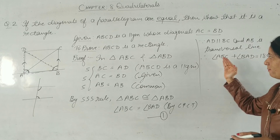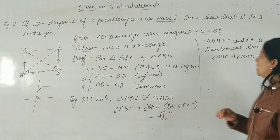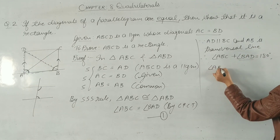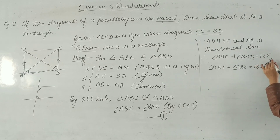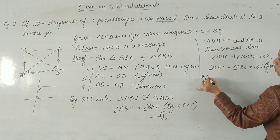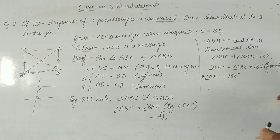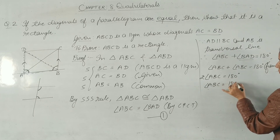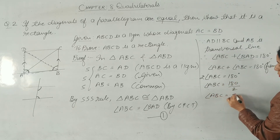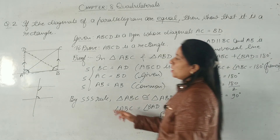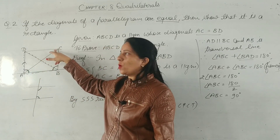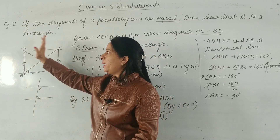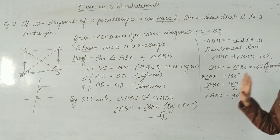Since angle ABC = angle BAD (from CPCT), we can substitute: angle ABC + angle ABC = 180 degrees, giving 2 × angle ABC = 180 degrees, so angle ABC = 90 degrees. If angle ABC is 90°, then angle BAD is also 90°. And since opposite angles in a parallelogram are equal, all four angles are 90 degrees — all angles are right angles.